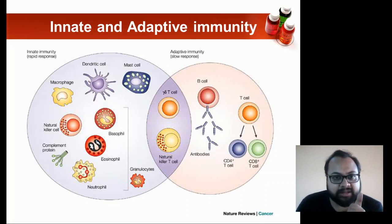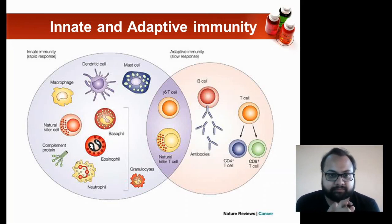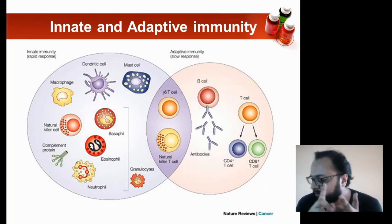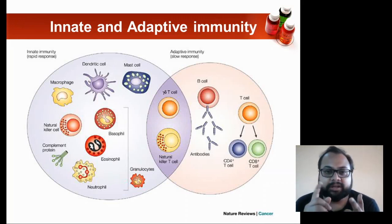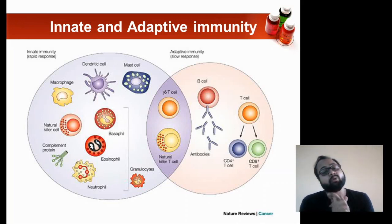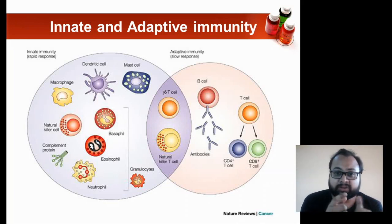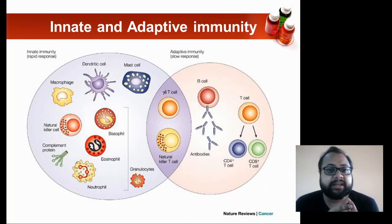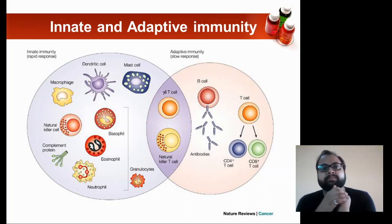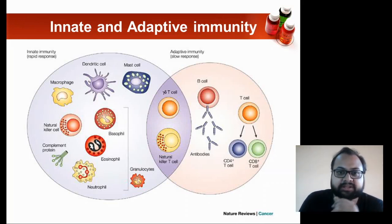The four defense barriers of the innate immune system are: number one, anatomic; number two, physiologic; number three, phagocytic; and number four, inflammatory defense.